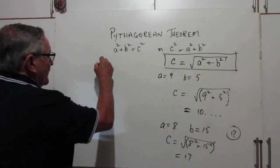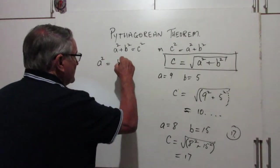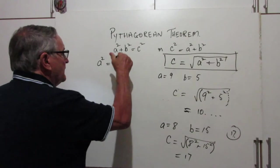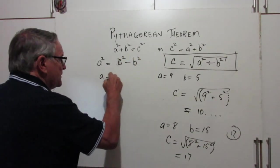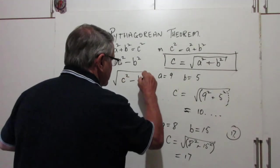On this side, if we want to find a leg, we've got a² is going to be c² minus b². So a is going to be the square root of c² minus b².